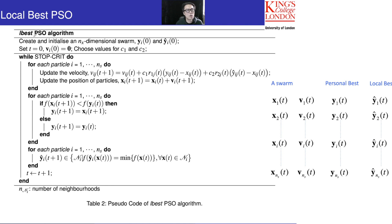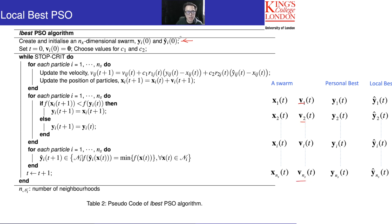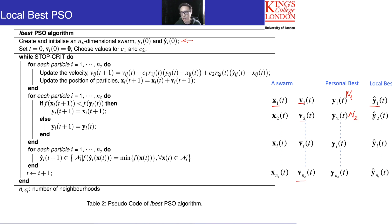Looking at the Local Best PSO pseudocode: initially we initialize yi-zero and y-hat_i-zero. We generate a population x1 to x_ns with associated velocities v1 to v_ns. At the first iteration, the personal best equals x since that is the best solution found so far. According to the defined neighborhoods we then choose the local best solution. For each particle, using the neighborhood definition, we determine the local best.